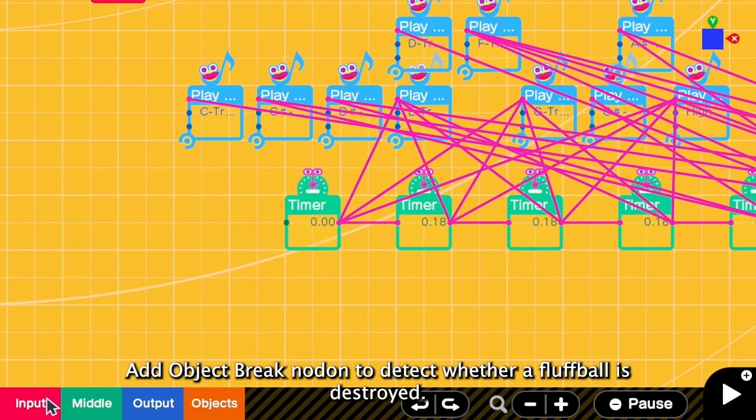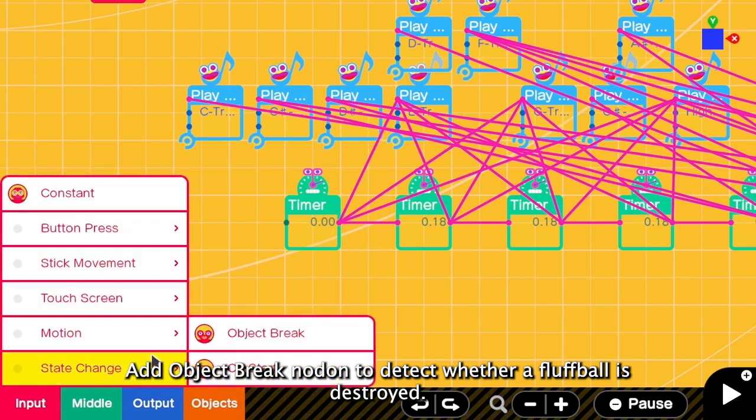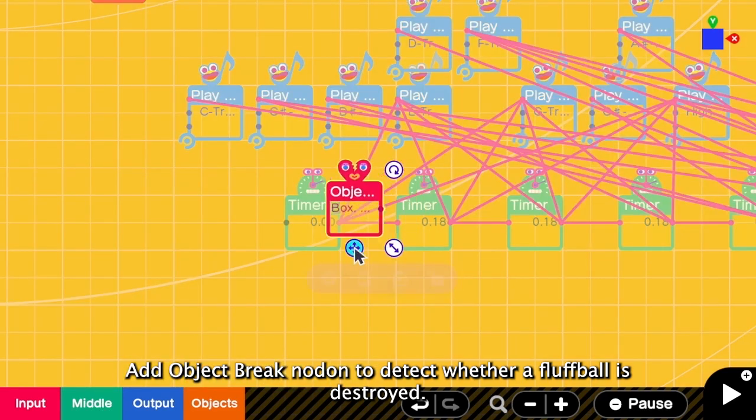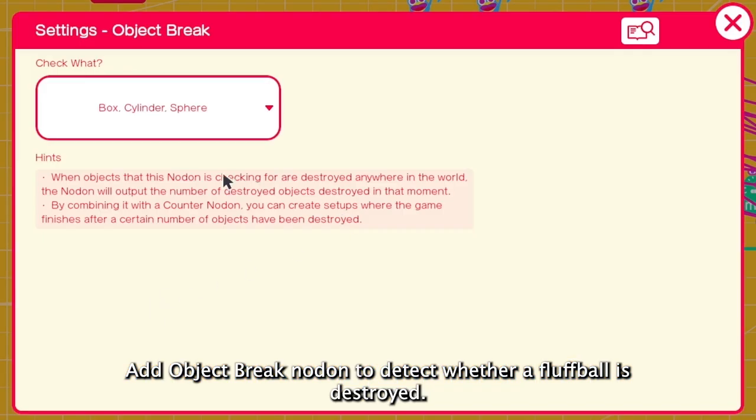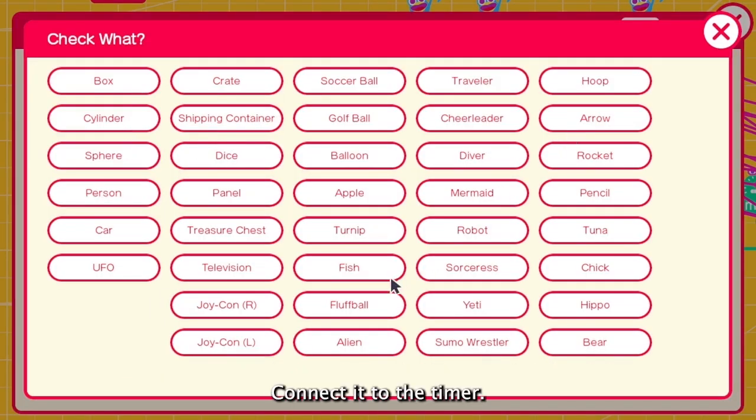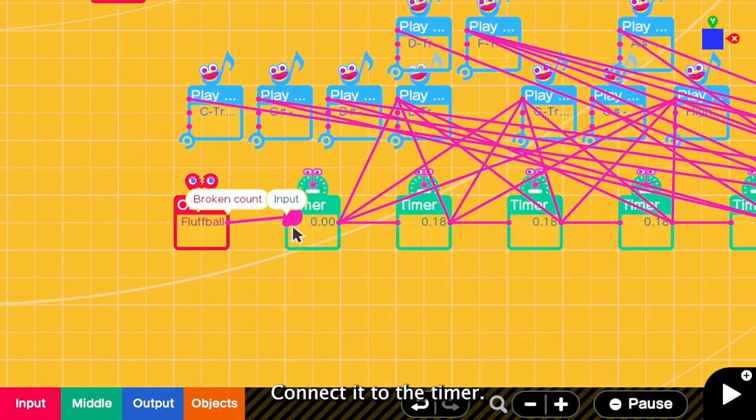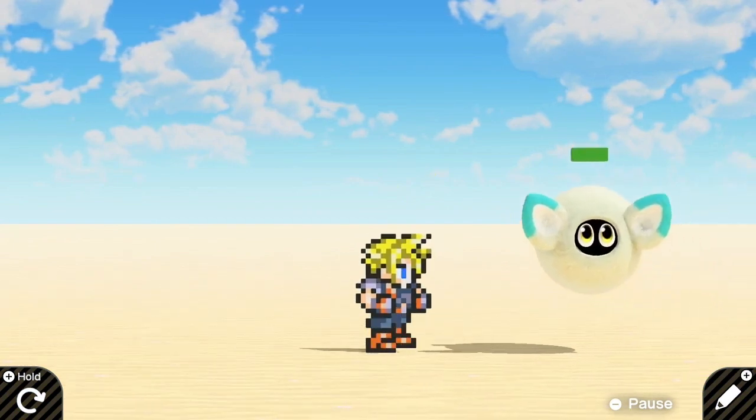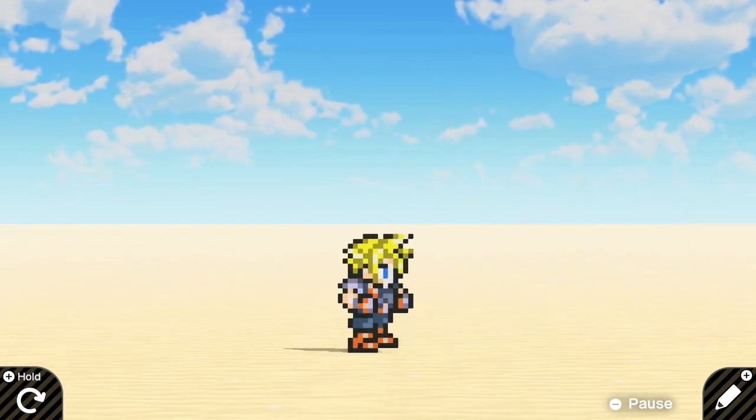Here I need to detect whether a fluff ball is destroyed. So I have to go to input state change object break. And here I have to detect the fluff ball. Then I connect this one to the timer. Okay, let's test it. Yay!